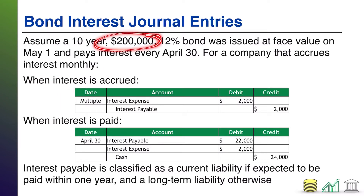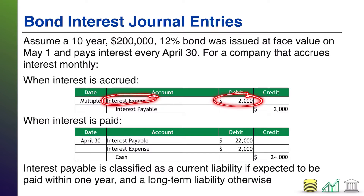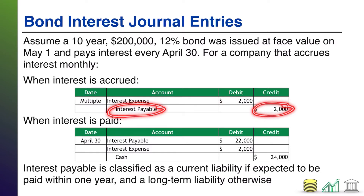If you take your $200,000 and your 12%, and you figure out your annual rate, that's going to come out to $24,000 per year of interest. Break that down monthly — that's $2,000 per month in interest. So every month, you would record interest expense of $2,000, because you have accrued a month's worth of interest cost, and interest payable of $2,000, because you're not paying it yet.